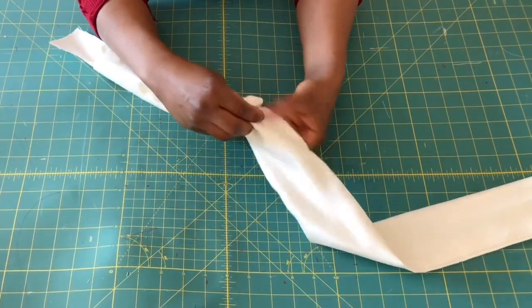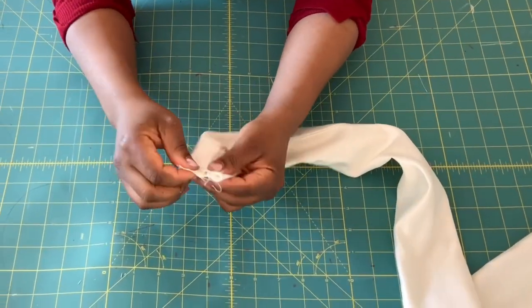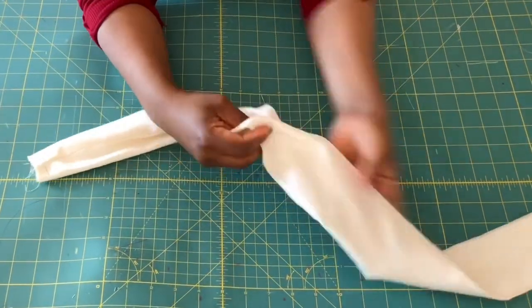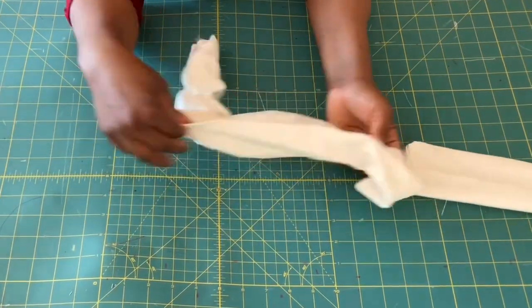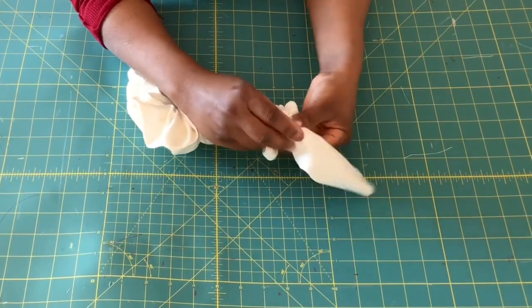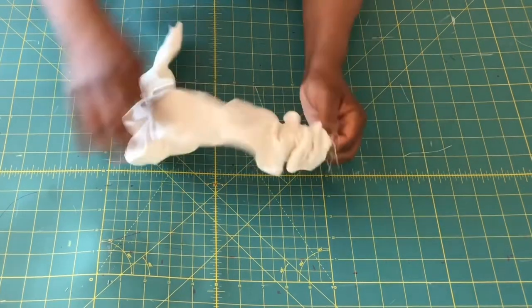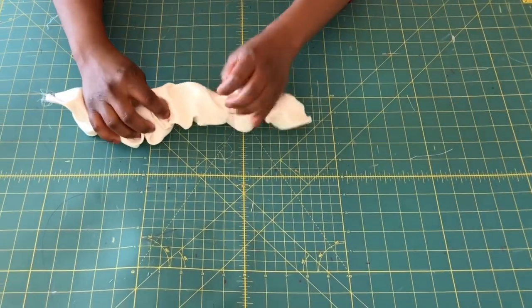The purpose of inserting the smaller fabric into the main fabric is to give you that scrunchy effect. After inserting it, go ahead and secure it, and your fabric should look somewhat like this.